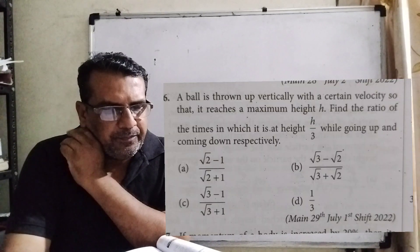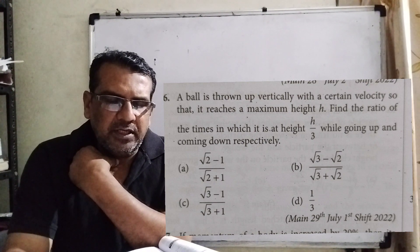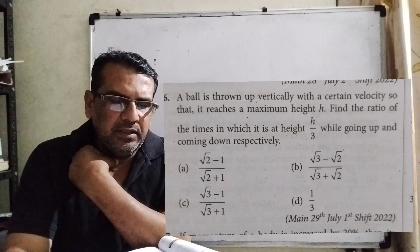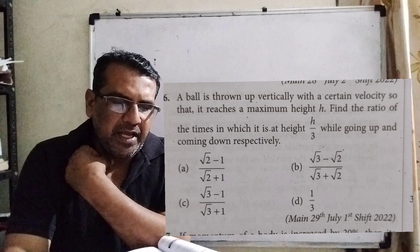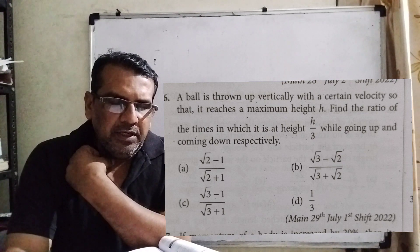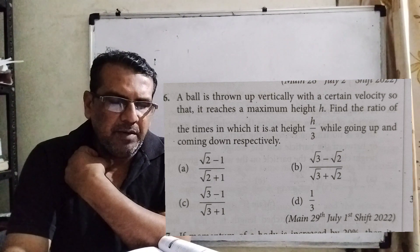Here's what the question says. A ball is thrown vertically with a certain velocity so that it reaches a maximum height h. Find the ratio of the time in which it is at height h/3 while going up and coming down respectively.